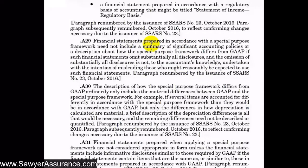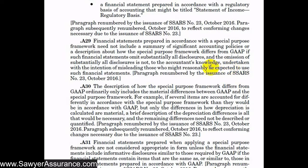If the entity omits substantially all disclosures, they are not necessarily required to include a description of the special purpose framework, a summary of significant accounting policies, or a description of how the special purpose framework differs from GAAP, because with no footnotes there is no way for them to do that. However, this is conditioned on the requirement that they were not intending to mislead the accountant or the users of the financial statements by omitting those disclosures.